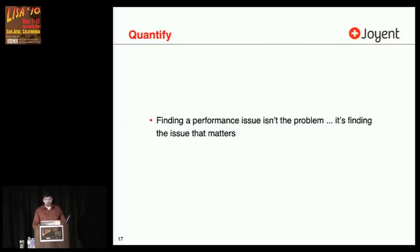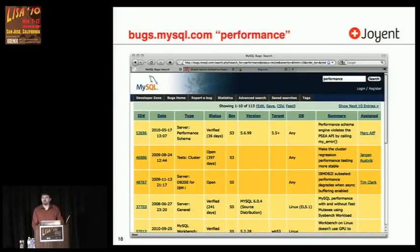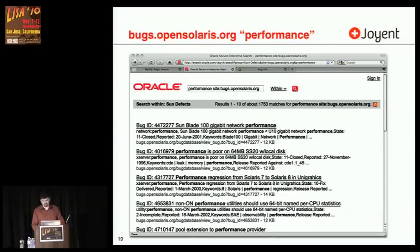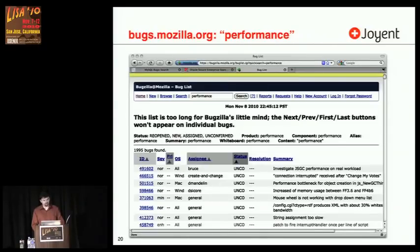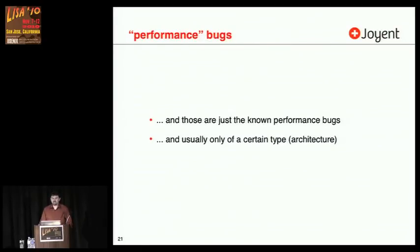I am stressing quantifying numbers accurately, because finding the performance issue isn't usually the problem — it's finding the issue that matters. If you search for performance on any given vendor website, MySQL has 113 bugs, OpenSolaris has 1,700 bugs, Mozilla — the list is too long for Bugzilla's little mind — it's got almost 2,000 bugs. And those are just the known performance bugs, and they're often only for a particular type — issues of architecture, software issues in the application.